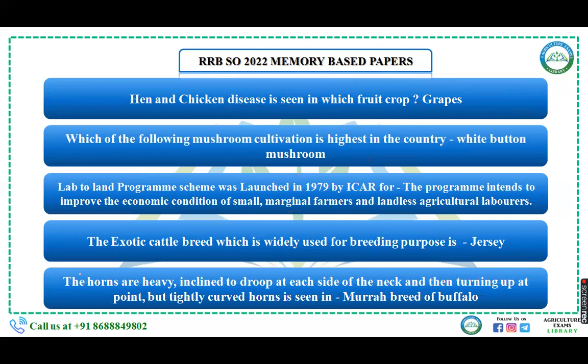Fawn leaf/hand and chicken disease is seen in which fruit crop? The answer is grapes. Which of the following mushroom cultivations is highest in the country? That is white button mushroom, which is cultivated on a large scale.